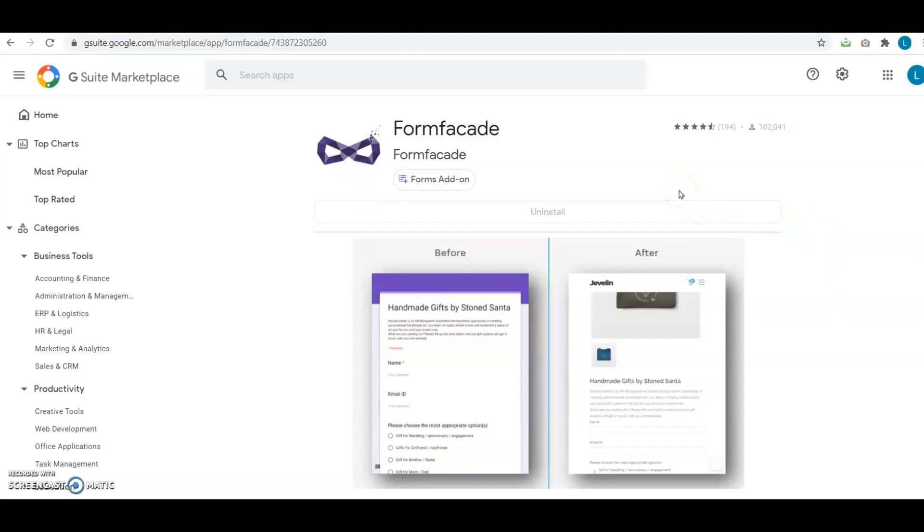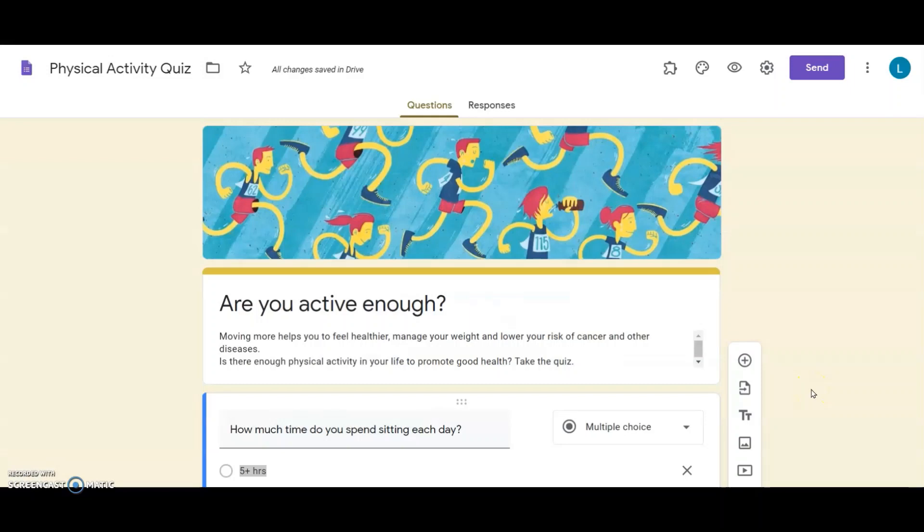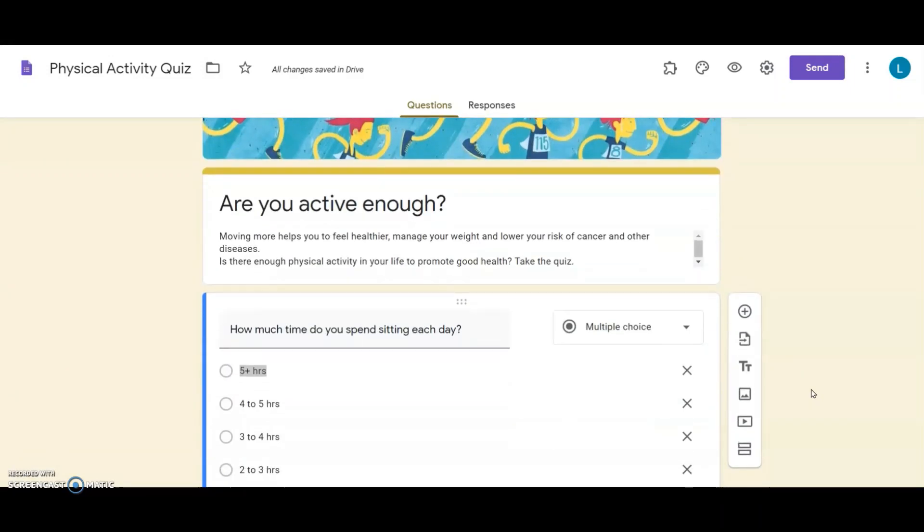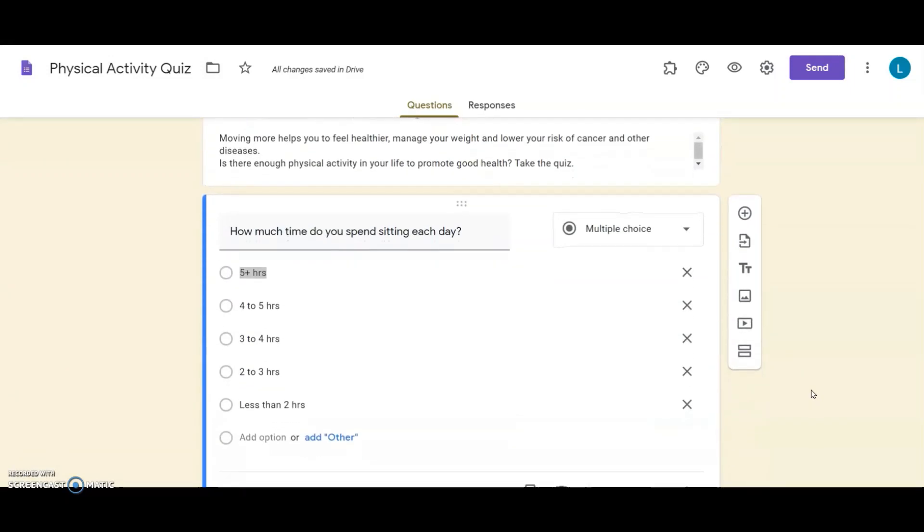First, install it from G Suite Marketplace. You can find the install URL and related articles of this add-on in the description box below. Create or open your Google Form with a set of questions in it already. I have a simple physical activity questionnaire ready to go.